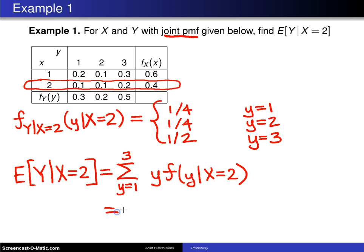So in this case, we get 1, which is right here, multiplied by 1 fourth, plus 2 multiplied by 1 fourth, plus 3 multiplied by 1 half.